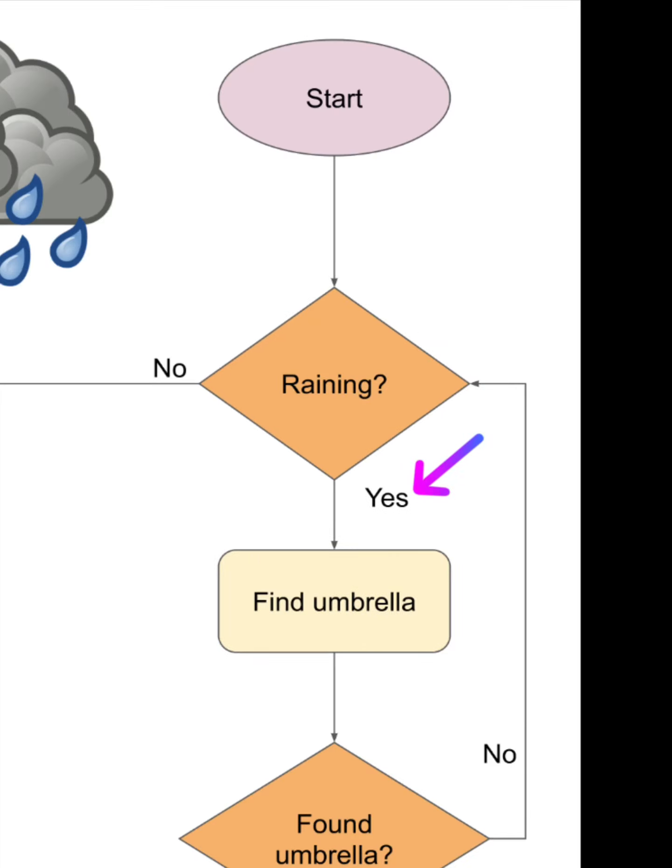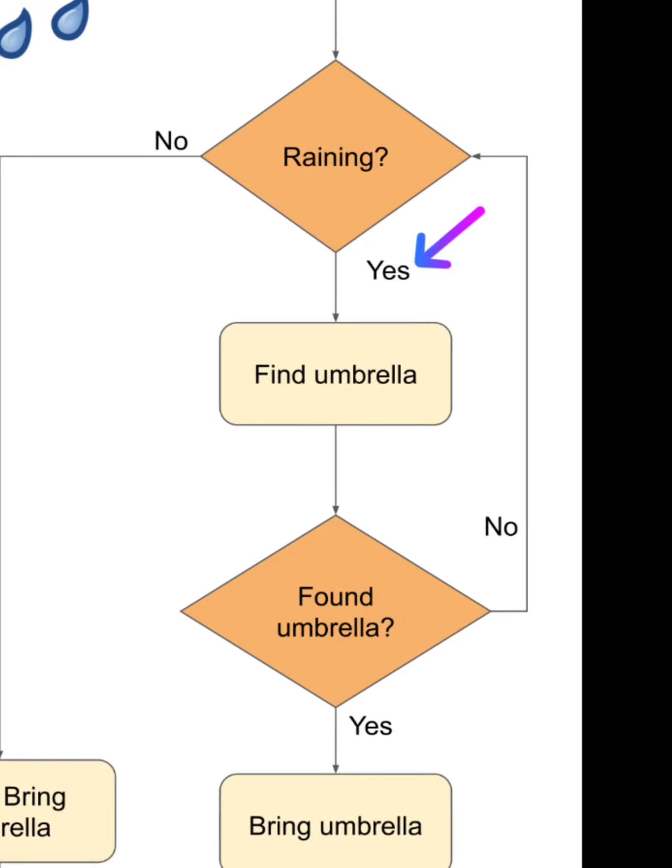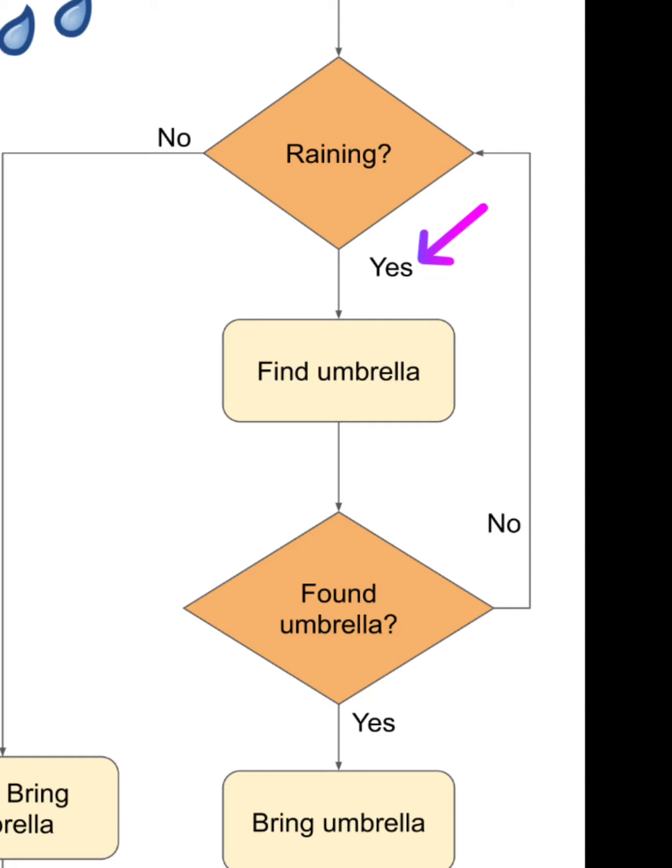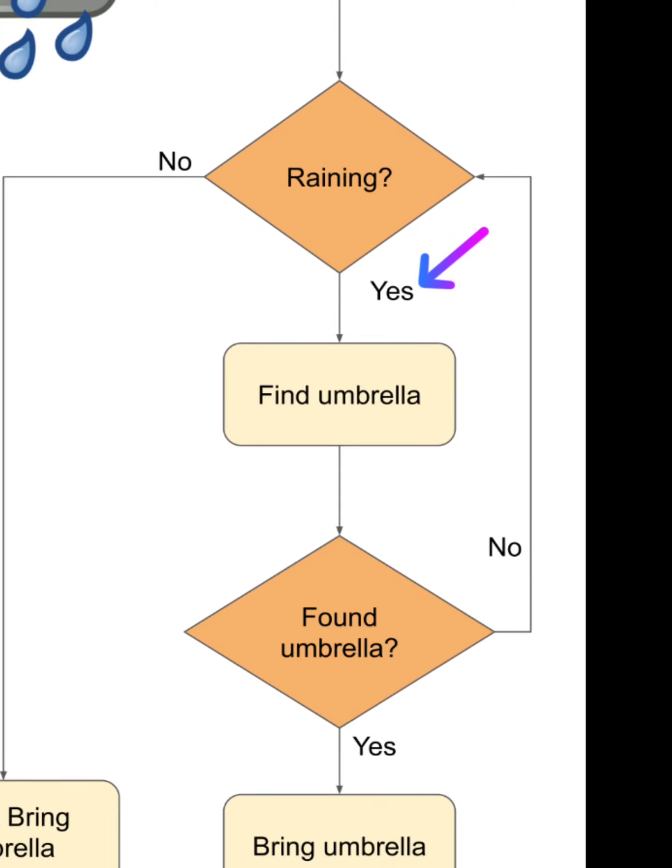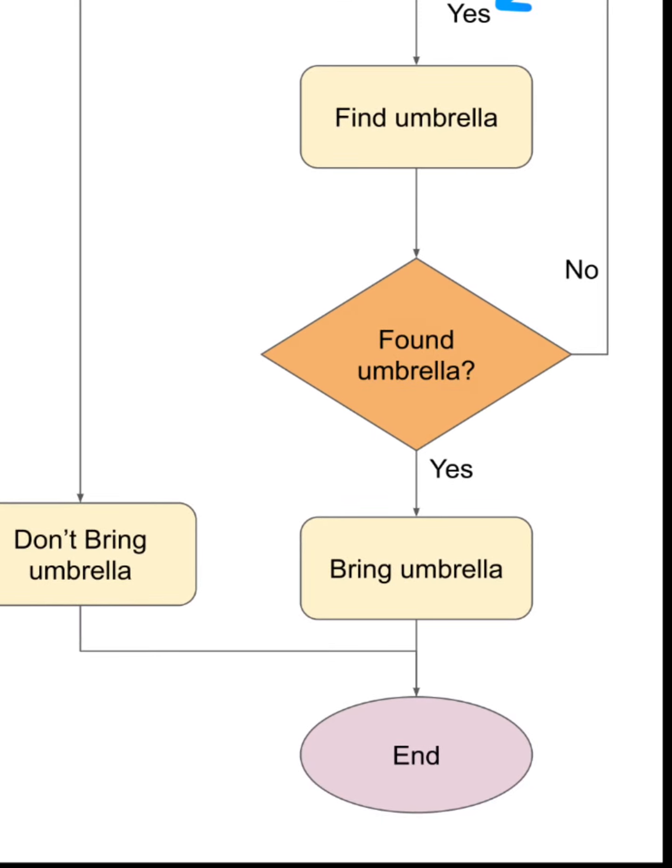However, if your answer to the question of is it raining is yes, you will go on to the next step which is to find an umbrella. And then the question is have you found the umbrella? If the answer is yes, then great bring it and then you can go on your walk. However, if you haven't found the umbrella, the answer is no and you flow back up the flow diagram to the question of raining again. If it's still raining, you've got to find the umbrella. If it stopped raining, you can not bring your umbrella and go for your walk.